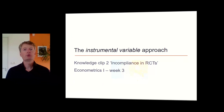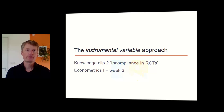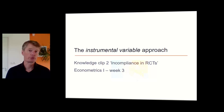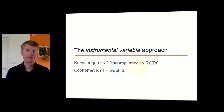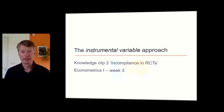Let's look at how instrumental variables work. We'll do so in a couple of steps. First of all, we'll focus on how instrumental variables can be of help when we have imperfect compliance in randomized controlled trials, and then later on we'll see how instrumental variables can help us within the context of observational data.